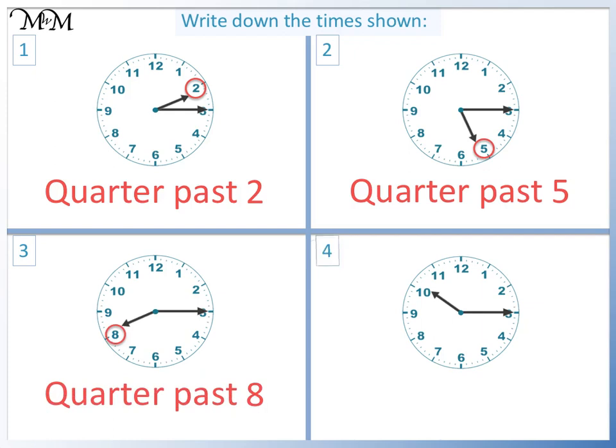Question four. The minute hand is at three. So, quarter past. The hour hand is past ten. So, the time is quarter past ten.